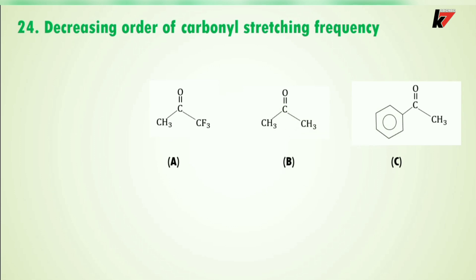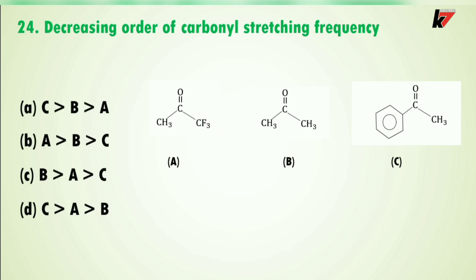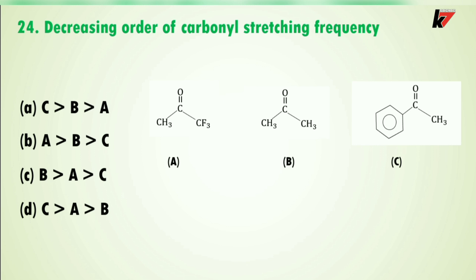Question 24: decreasing order of carbonyl stretching frequency — structure B is a simple ketone, one methyl group is replaced by a phenyl group in another structure, and in another the H atoms are replaced by fluorine atoms. The correct answer is option B. Structure C has the lowest carbonyl stretching frequency due to greater conjugation — more conjugation leads to lower stretching frequency. Structure A has the highest carbonyl frequency because fluorine's minus I effect increases the stretching frequency. So the order is A > B > C.